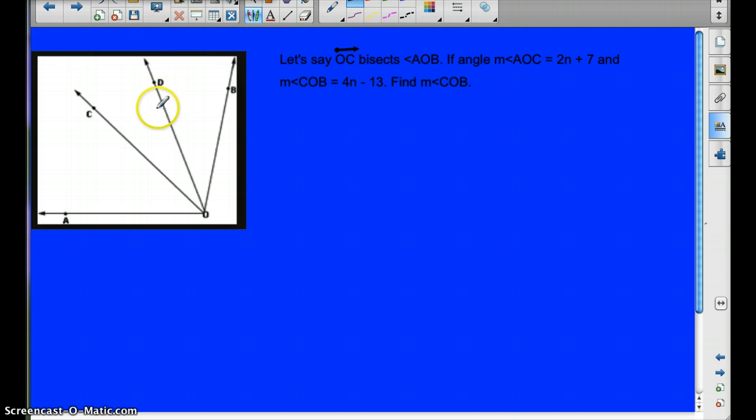So let's use bisects in a problem with algebra. Pause the video and write this down. Okay, so we're going to mark up this picture here. Let's say OC bisects angle AOB. So here's AOB. Here's AOB. And since it bisects AOB, we know it's going to be cut in half here. So these two angles are congruent to one another.